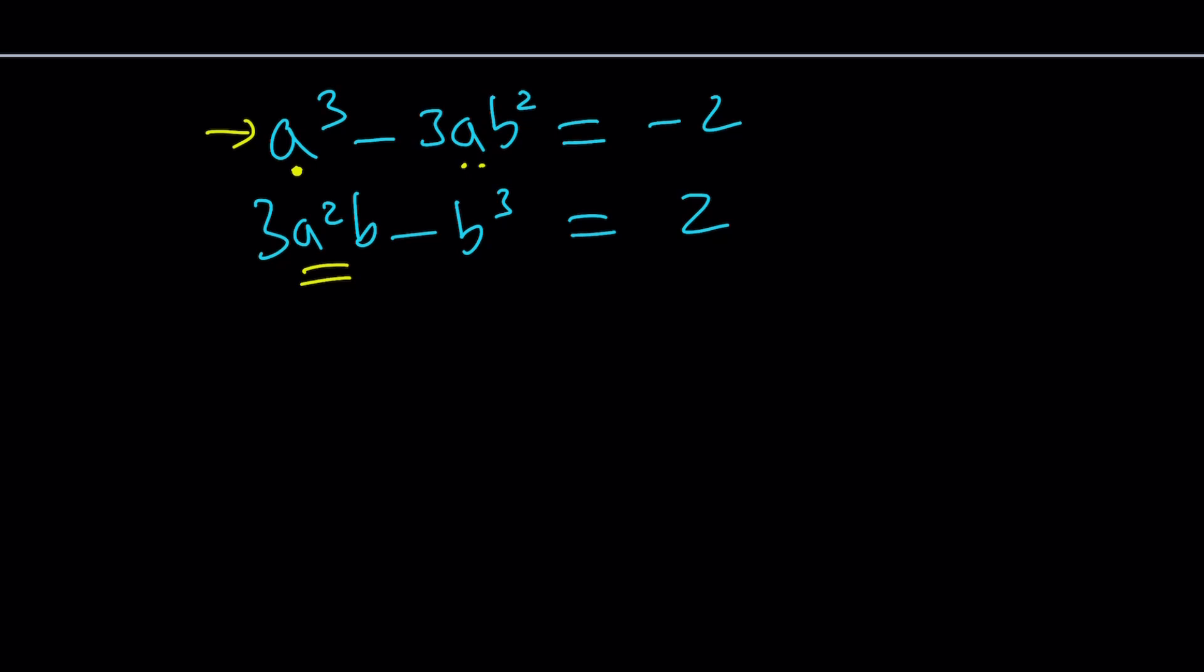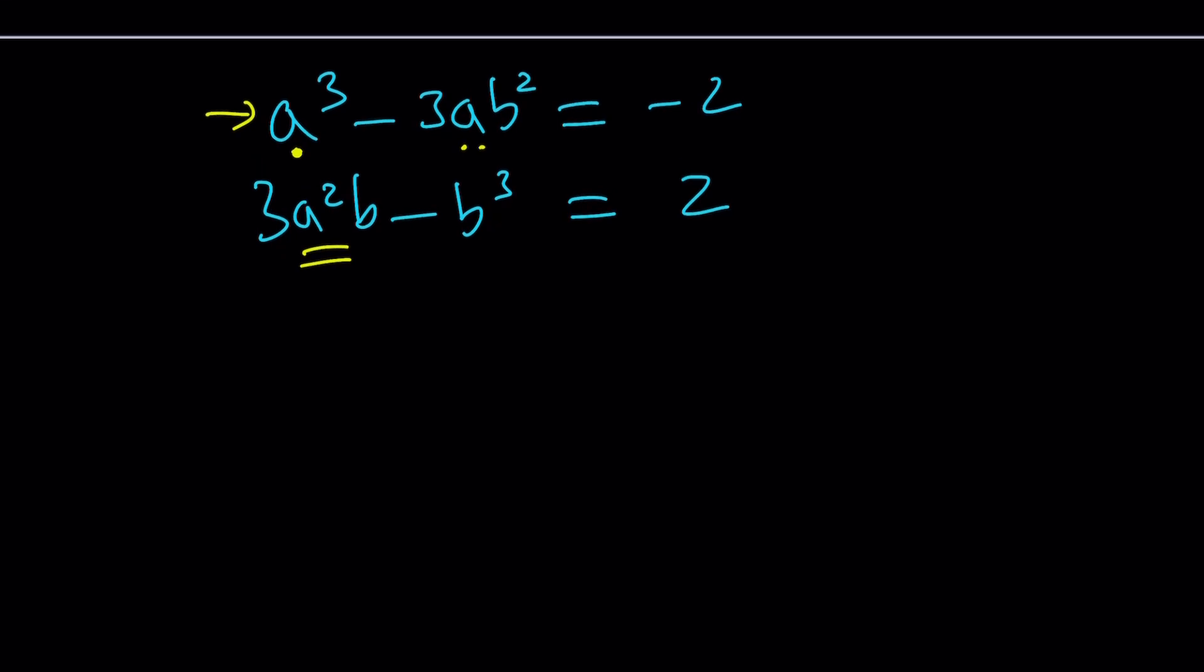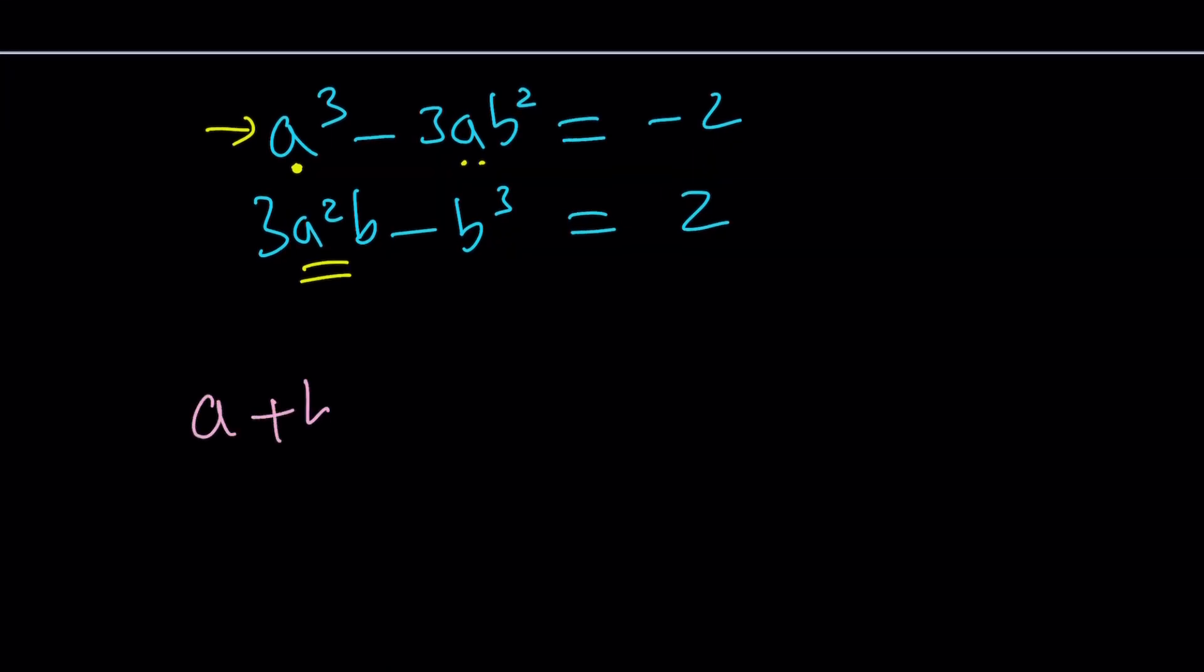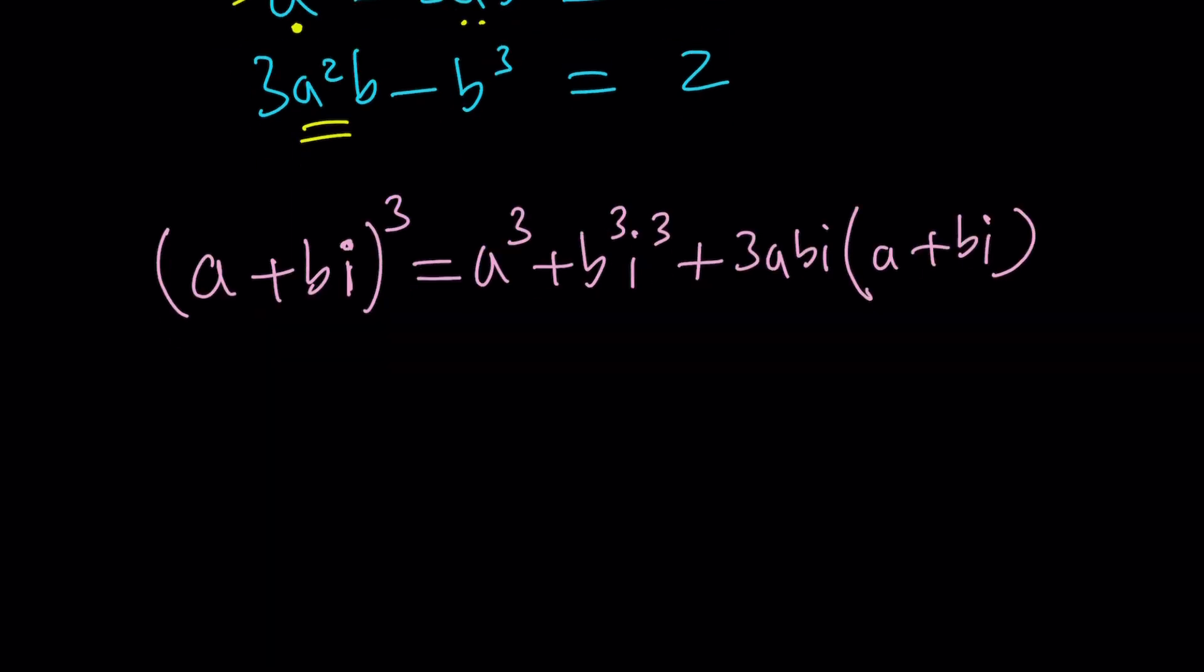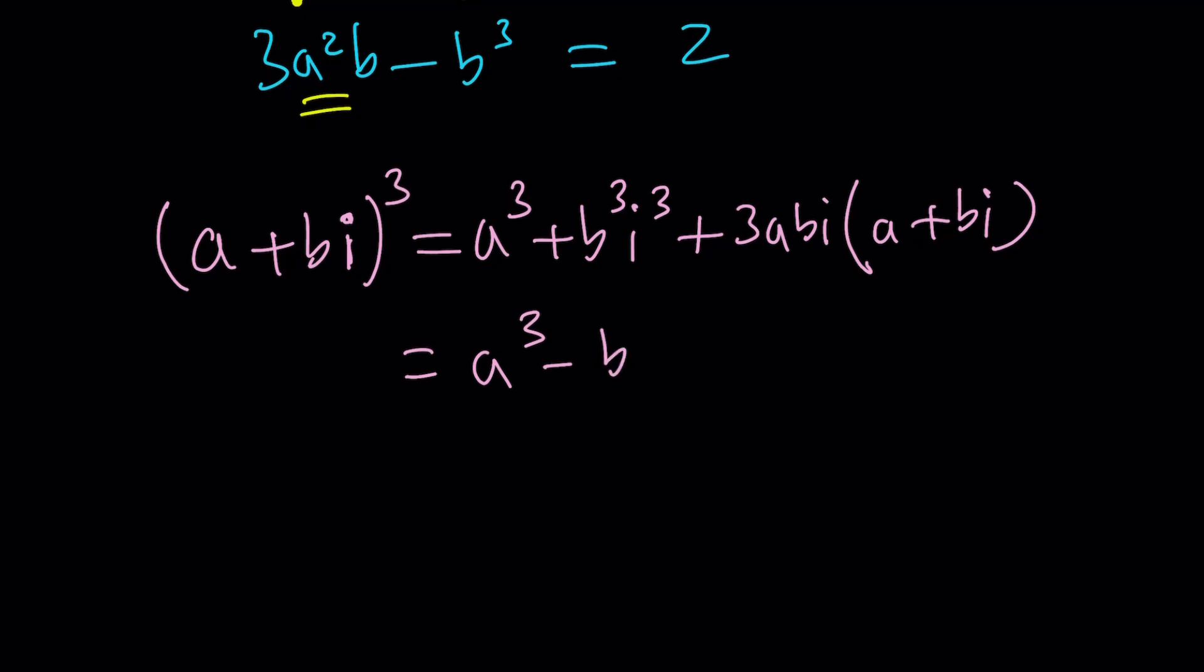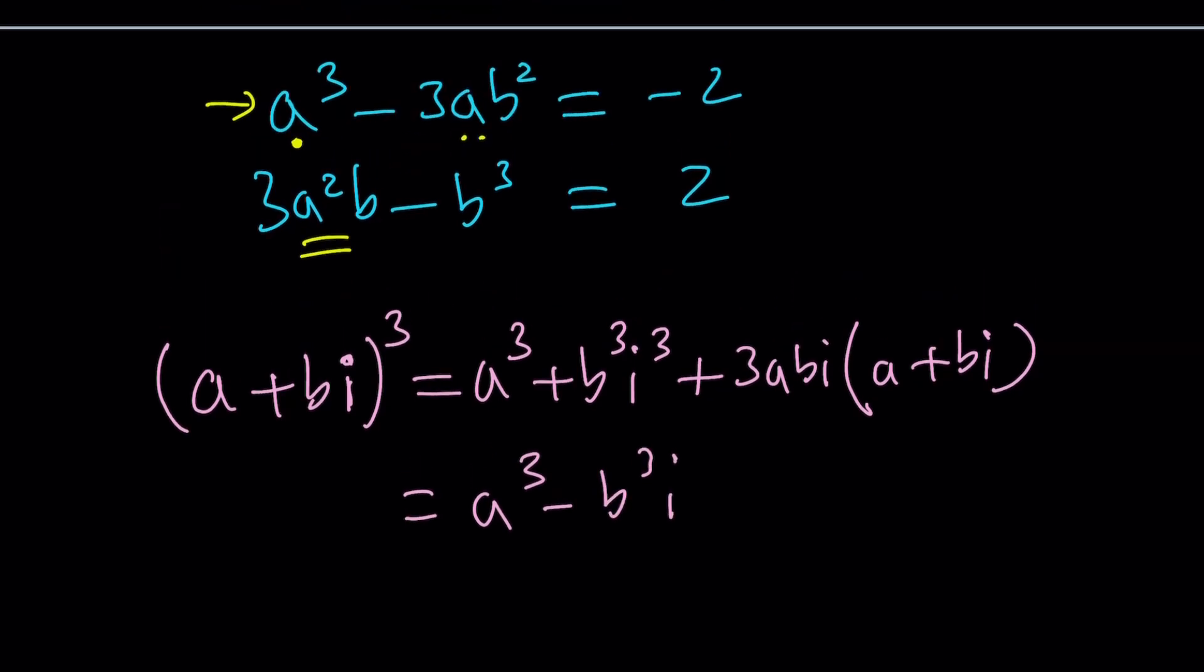If you cube (a + bi), you get a³ + b³i³ + 3abi(a + bi). Since i³ = -i, this gives a³ - b³i. Then 3a²bi + 3ab²i² = 3a²bi - 3ab². Combining: (a + bi)³ = a³ - 3ab² + (3a²b - b³)i.